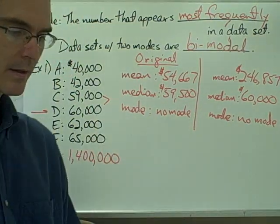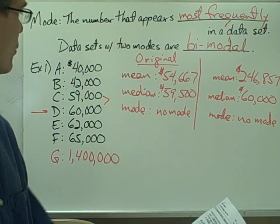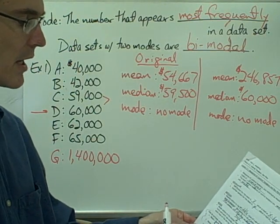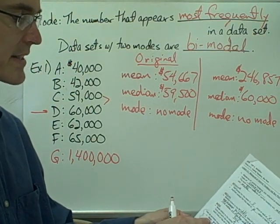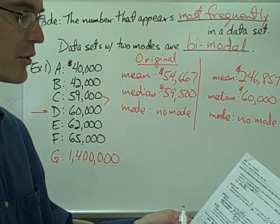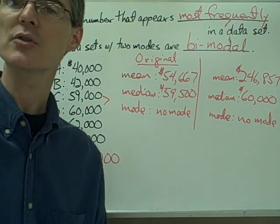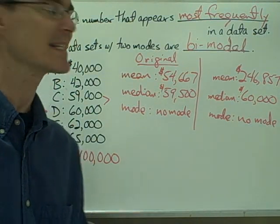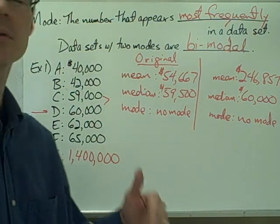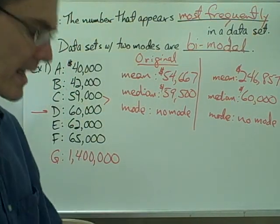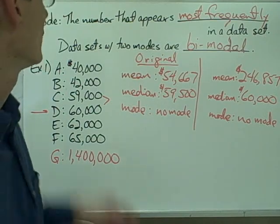We're going to talk a little bit more about that. In your notes, it asks how do extreme values or outliers affect the measures of central tendency — I'm going to leave that for you to fill out, and we'll talk more about it in class tomorrow.